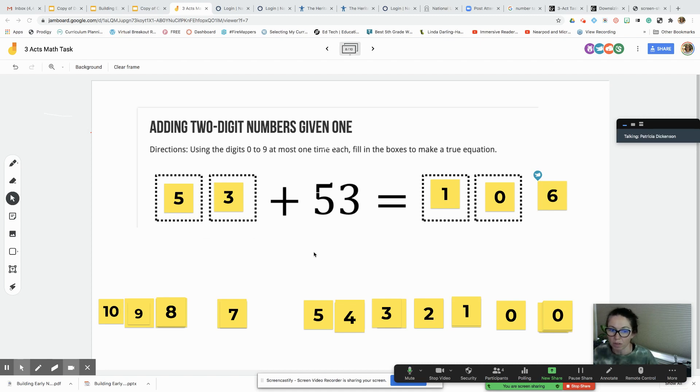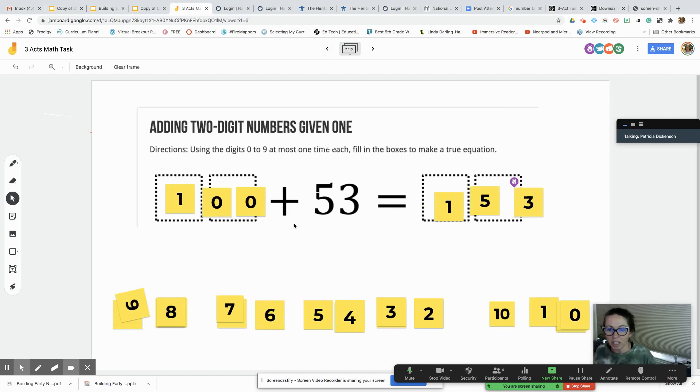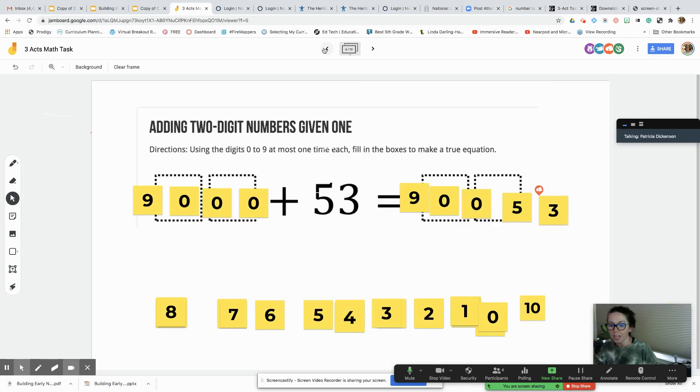All right, okay. Kat, can you tell us what you did? Yes, I did 100 plus 53 equals 153. Excellent! So you actually used three-digit numbers that has ones, tens, and hundreds. Excellent work. Thumbs up if you agree.